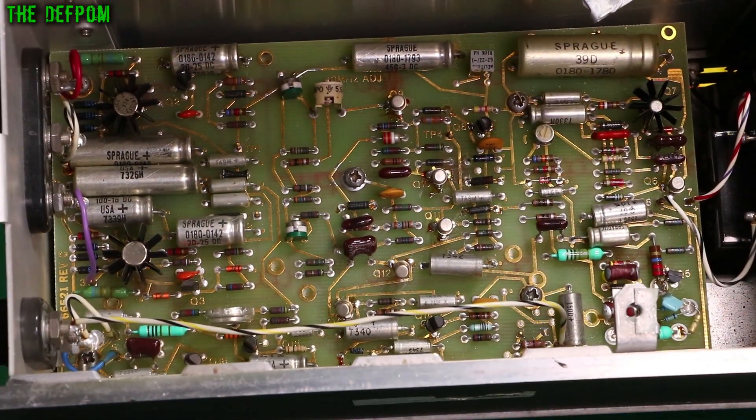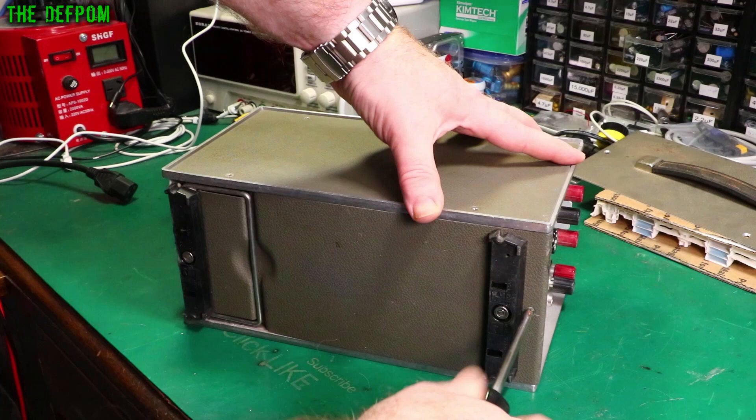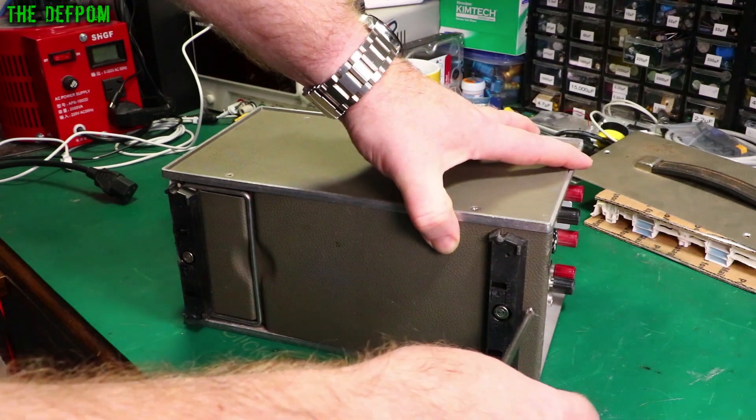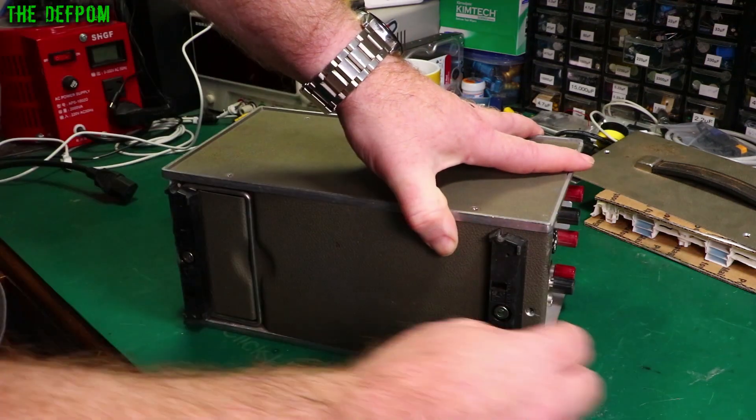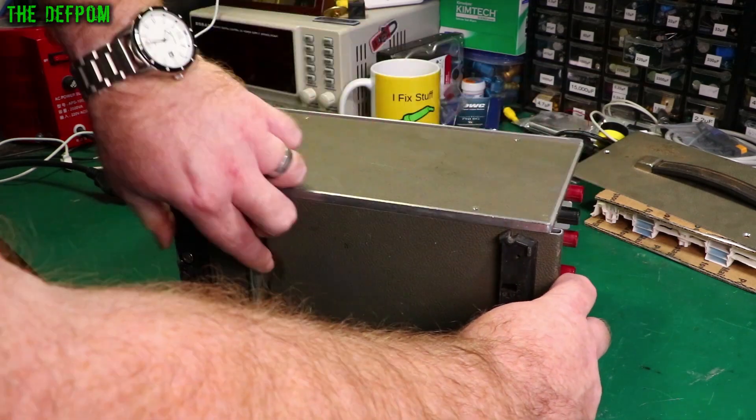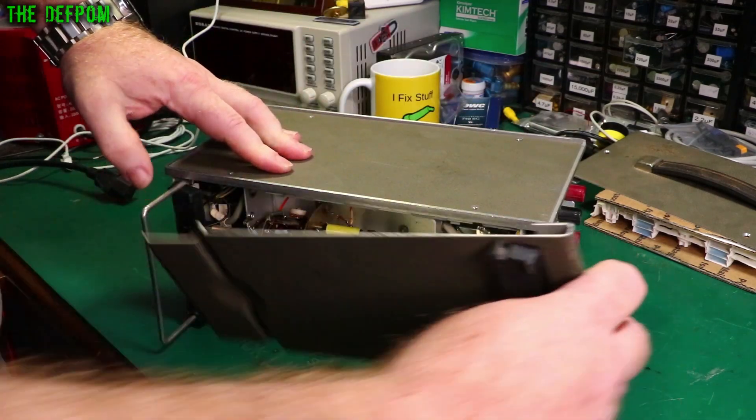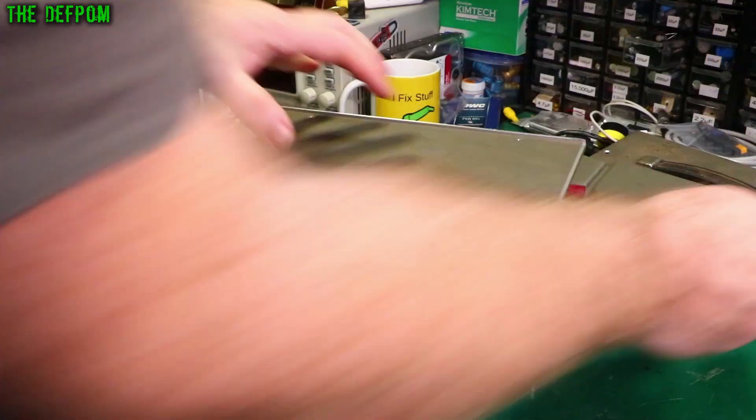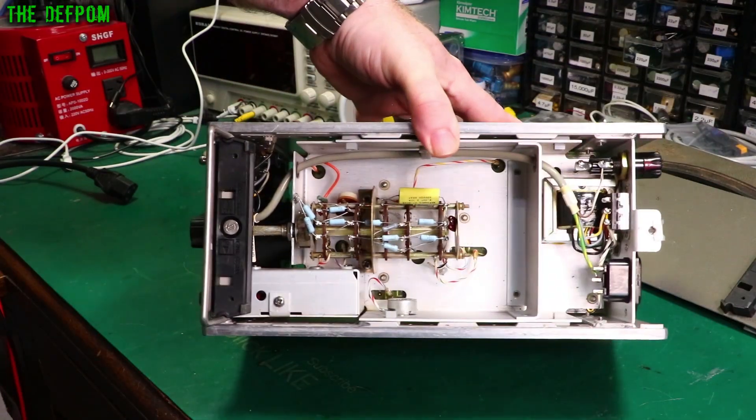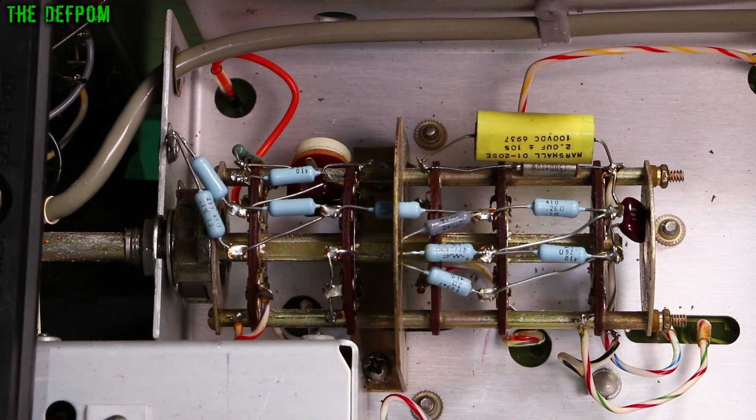So I think this is all we've got to do to get the bottom cover off. Let's take this one screw out. And then slide it back. Yes. There we go. And that's what's on the bottom of the unit. Look at that.